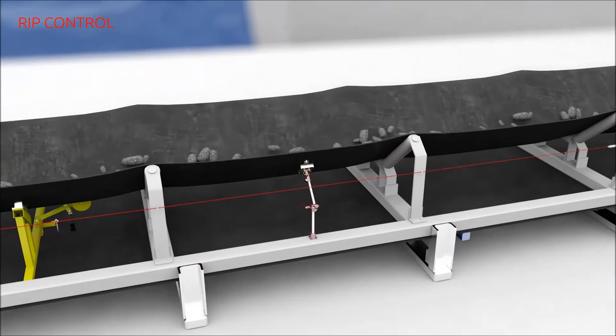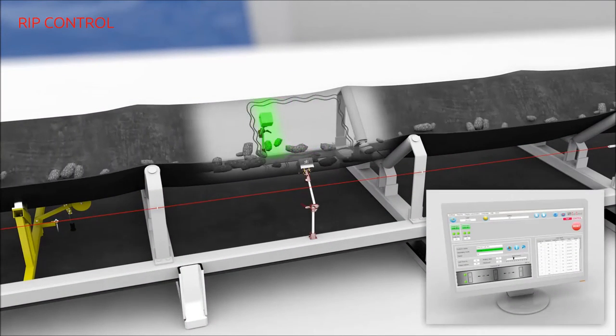Special induction loops are first installed in the conveyor belt and are controlled by suitable sensors.